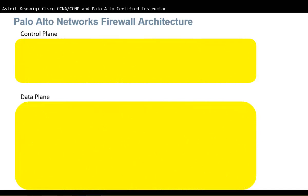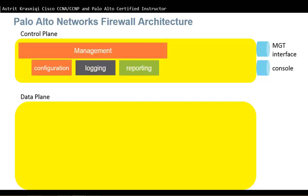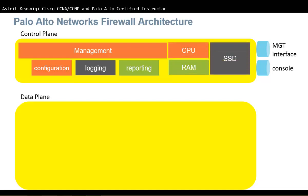Now, Palo Alto Network Firewall Architecture — like other architectures, we have a control plane and a data plane. The control plane can be accessed from the management interface as well as from the console port. In the control plane we have management functions: configuring, login, reporting, and so on. In there we are going to see CPU, RAM, and SSD.